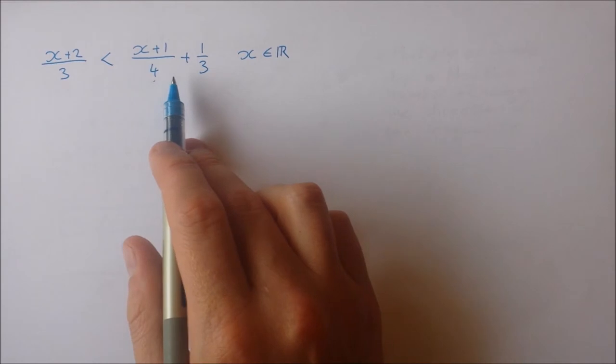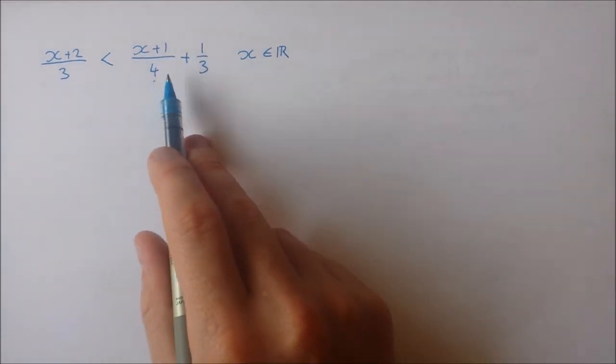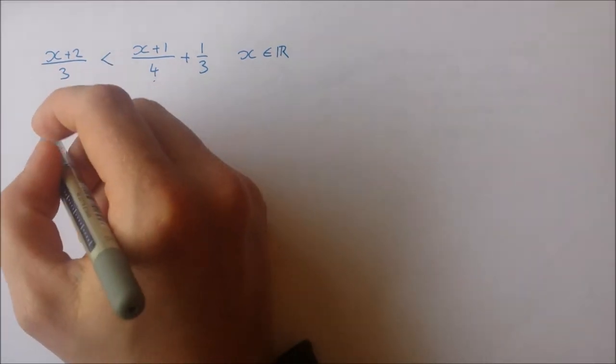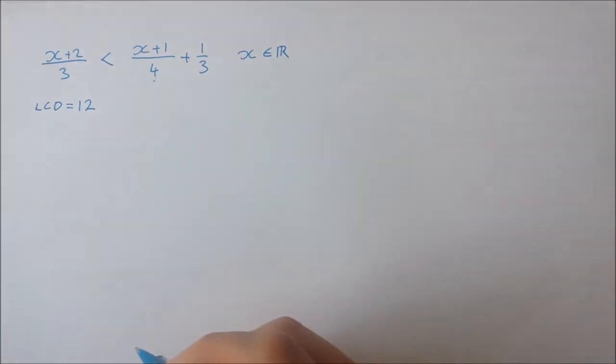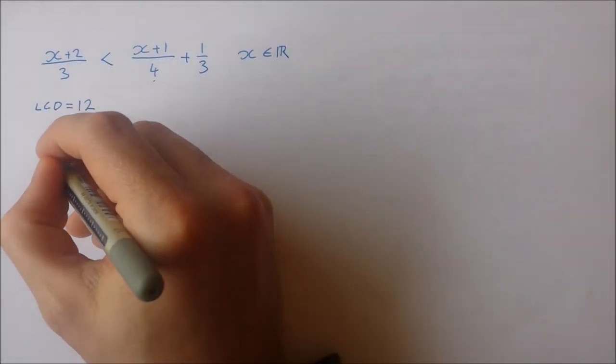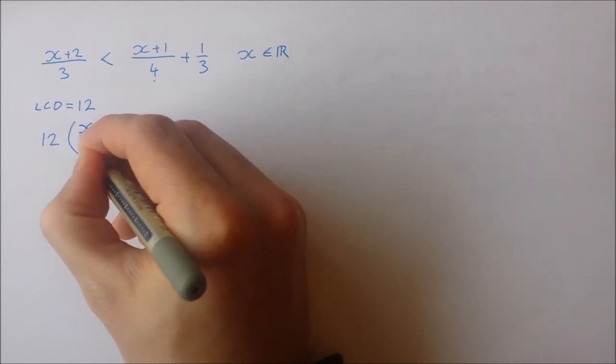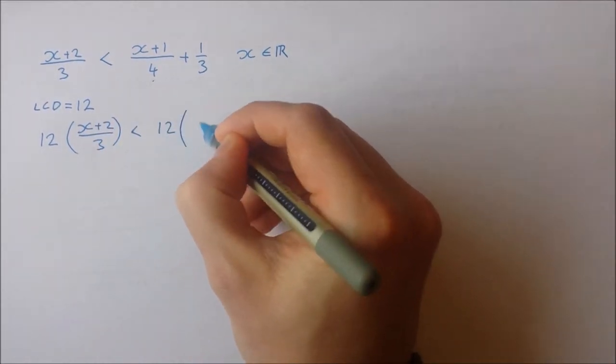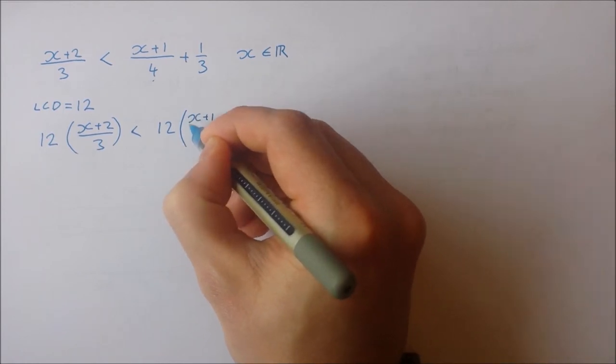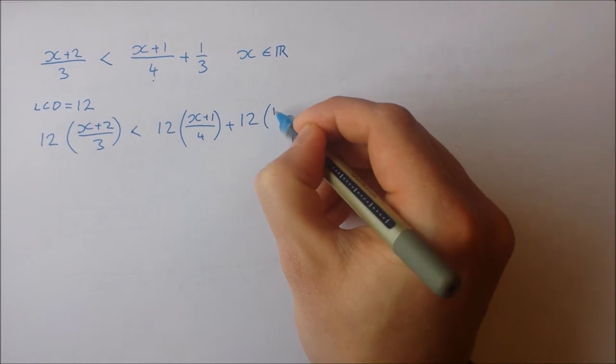So just like with equations, the first thing I'm going to do is get rid of these fractions by multiplying by the lowest common denominator, which in this case is 12. So multiplying everything by 12, I get 12 times x plus 2 over 3 is less than 12 times x plus 1 over 4 plus 12 times a third.